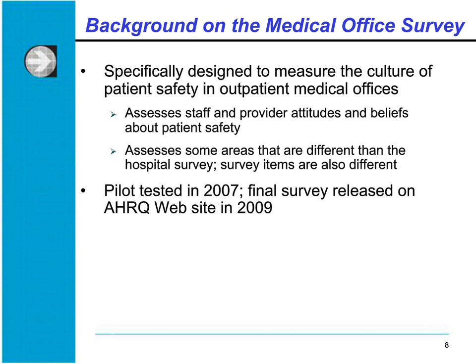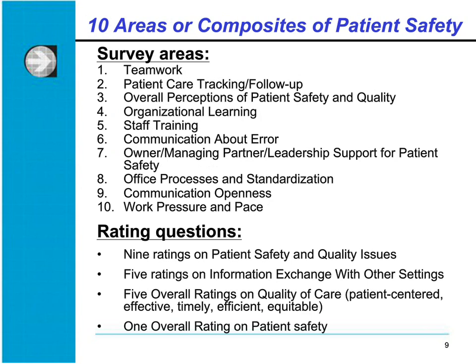The Medical Office Survey has ten composites, ranging from teamwork and patient care tracking and follow-up to work pressure and pace. It also includes nine ratings on patient safety and quality issues, five ratings on information exchange with other settings, five overall ratings on quality of care that match the IOM dimensions of care, and one overall rating on patient safety.